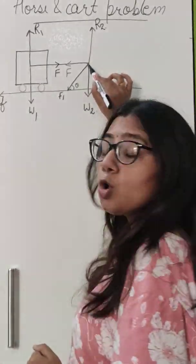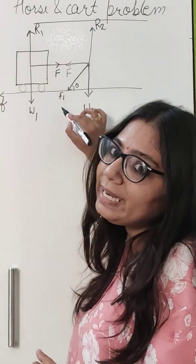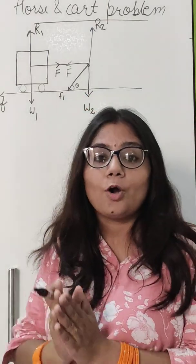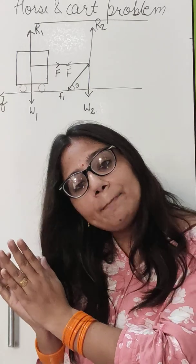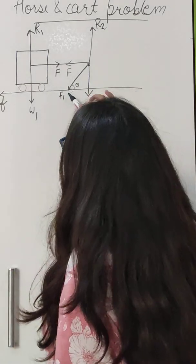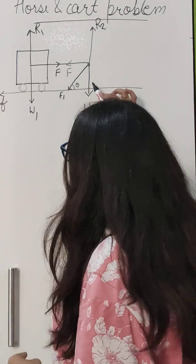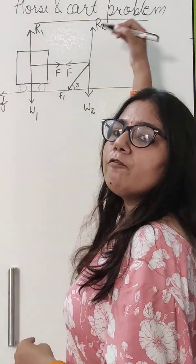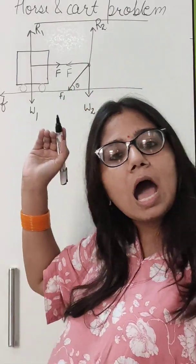If this force is exerting force on the ground in the backward direction, then by Newton's third law, the ground is also going to apply force on this horse in the forward direction, represented by force R.